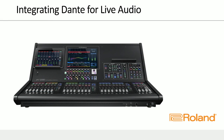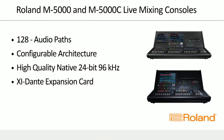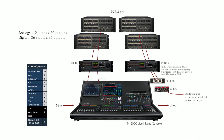Next I'm turning it over to Brian, who's going to cover the M5000 and explain how you patch Dante into it. The M5000 and 5000C are 128 audio path, configurable architecture consoles with a native resolution of 24-bit, 96K. They have two expansion card slots, so you can put an XI Dante card in, and anything that touches the desk can be translated out to Dante. A typical ecosystem has stage boxes going through 1000 recorders, all going into the console, and then you choose what goes out to the Dante card.